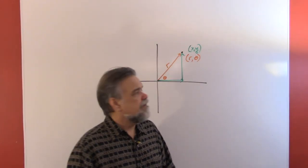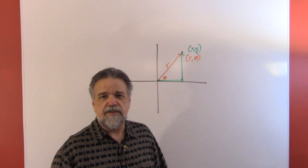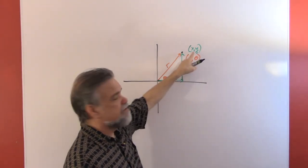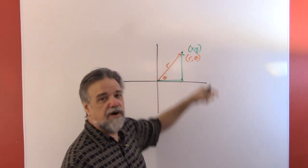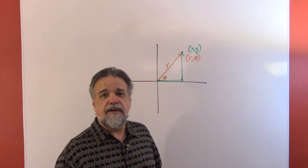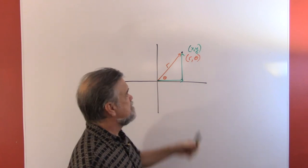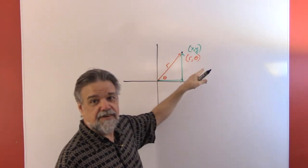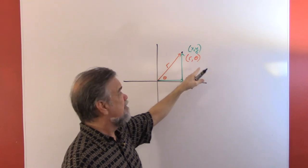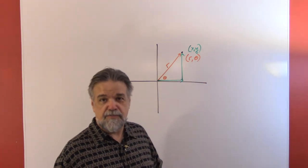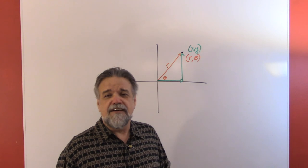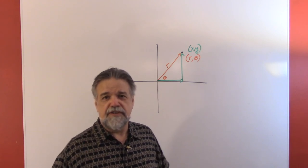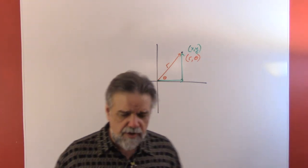Strangely enough, with Cartesian coordinates or rectangular coordinates, x is generally your independent variable and y is your dependent variable. With polar coordinates, the second one, theta, is your independent variable, and r is generally your dependent variable. A little confusing there, but I'm sure you can handle it.